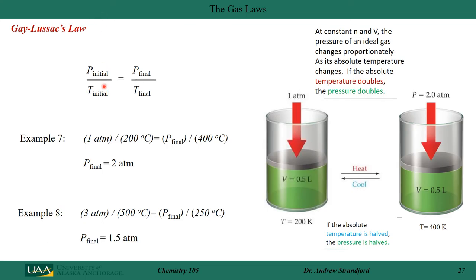For Guy-Lussac's law examples: if I have a gas at one atmosphere and 200 degrees C and heat it to 400 degrees C, my final pressure is 2 atmospheres. In example two, if I have 3 atmospheres at 500 degrees and decrease the temperature, the pressure decreases by a factor of two down to 1.5 atmospheres. Pressure and temperature are directly proportional.